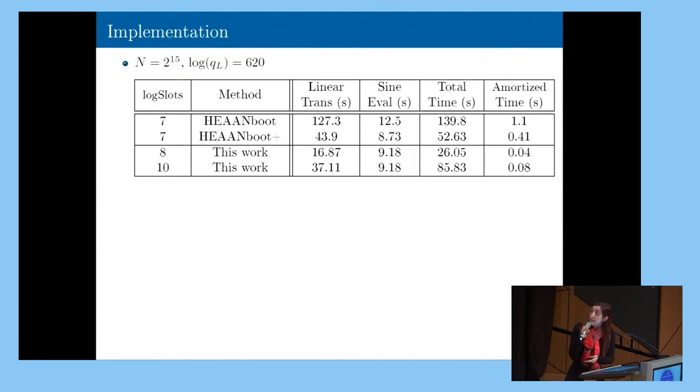So I will present you two implementation results on two different parameter sets. The first one is this one. On the higher part, you can see the HEAN bootstrap original results and the improved results by the implementation. And then our results. So if you check the linear transform column, you can see that in here we have a huge improvement in terms of timing. And this improvement is even more evident when you go watching the amortized timing.